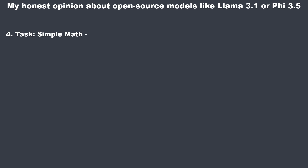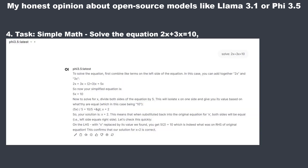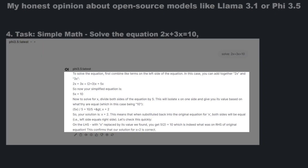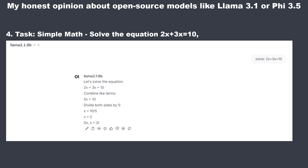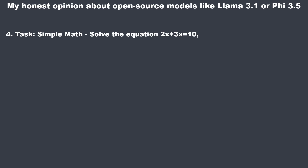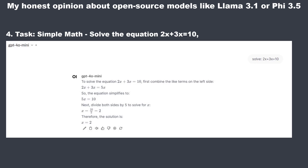The last task was a mathematical one: solve 2x + 3x = 10, what is x? PHY 3.5 gets the correct answer of 2 but uses unexplained abbreviations like LHS and RHS, and the explanation is convoluted. LLAMA 3.1 also solved it correctly with a much clearer explanation — a much better job than PHY 3.5. GPT-4O mini also solved the equation and provided a nice, clear explanation of how it arrived at the result.